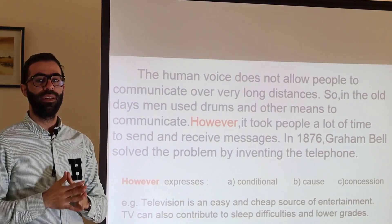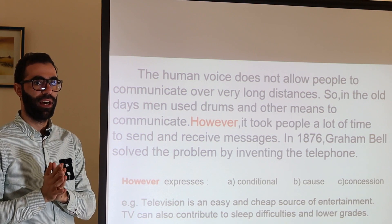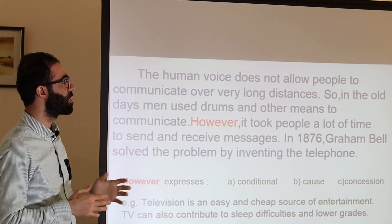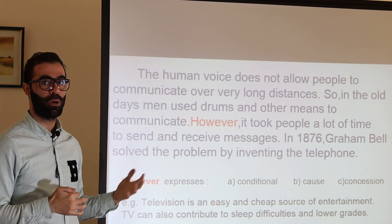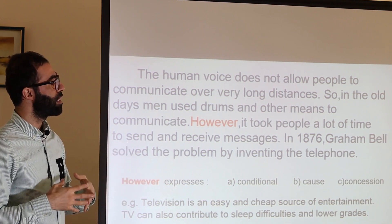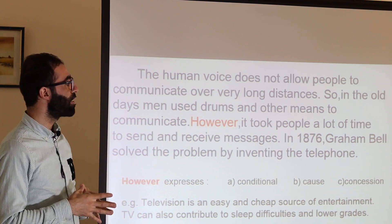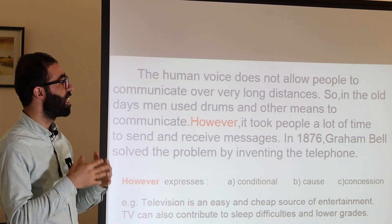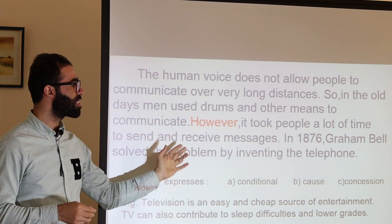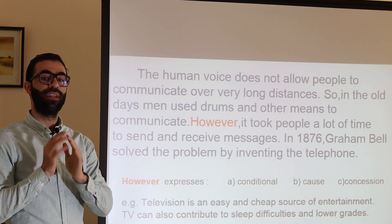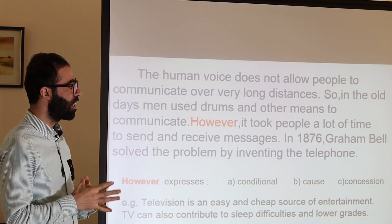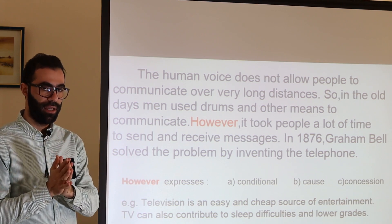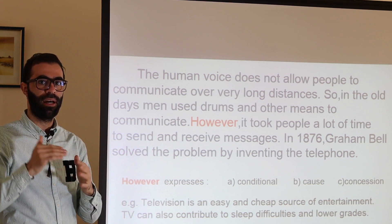Now let's see the correction. The problem is: the human voice doesn't allow people to communicate over very long distances. The initial solution: in the old days, men used drums and other means to communicate. The problem raised by the initial solution: it took people a lot of time to send and receive messages. And the final invention: in 1876, Graham Bell solved the problem by inventing the telephone.